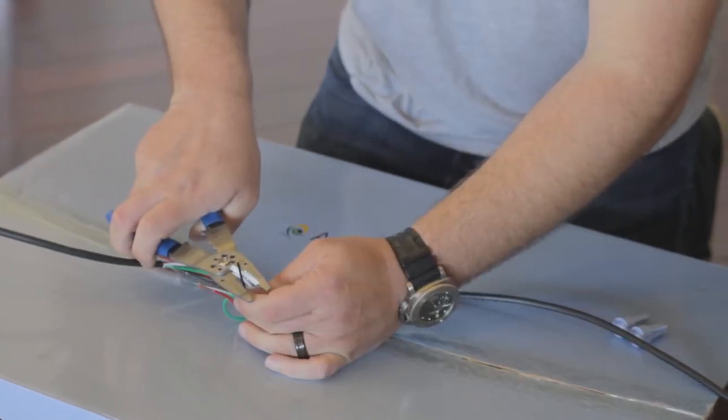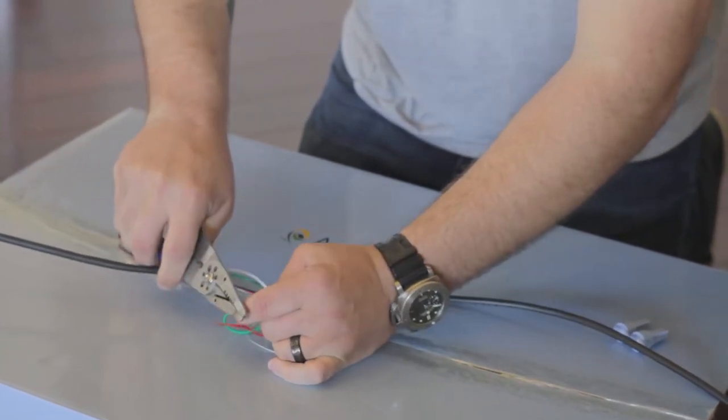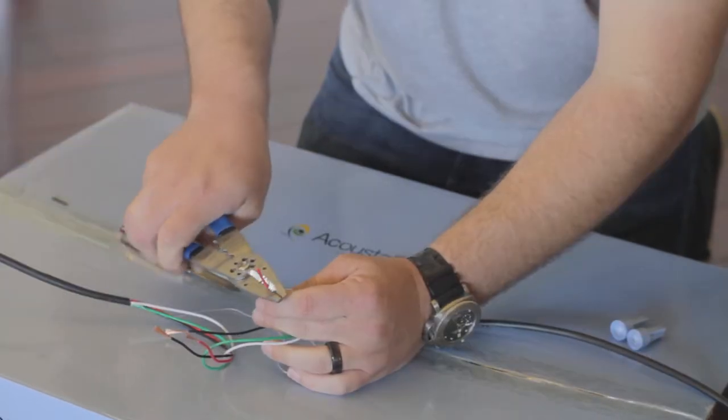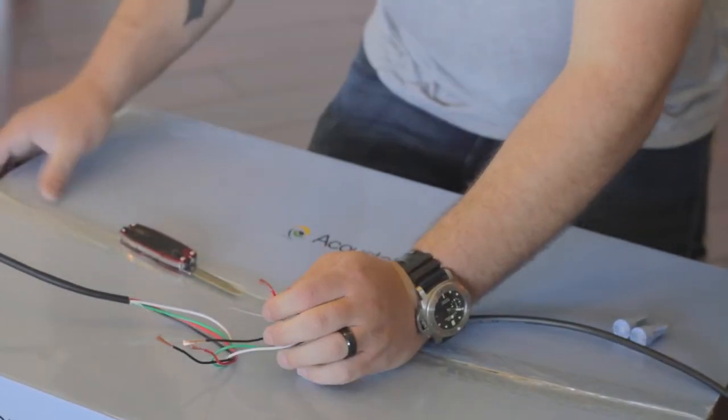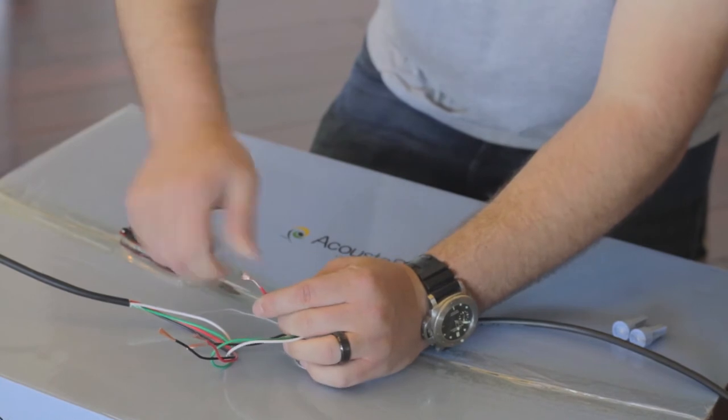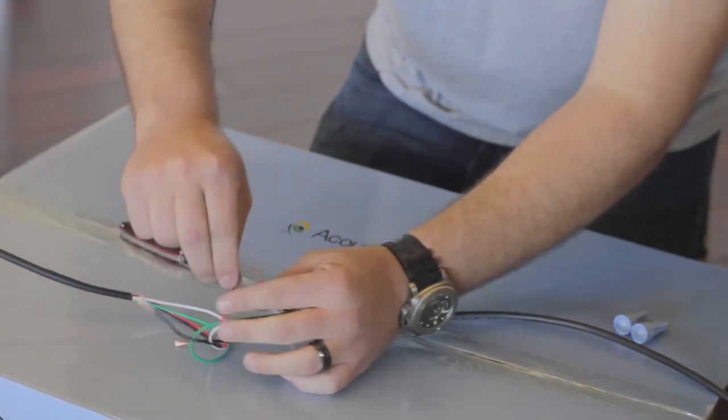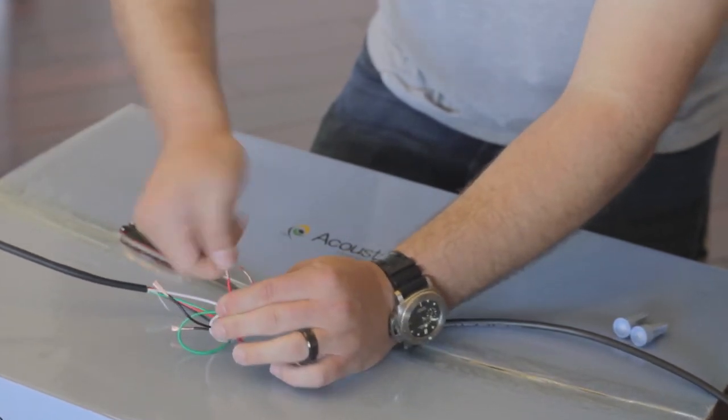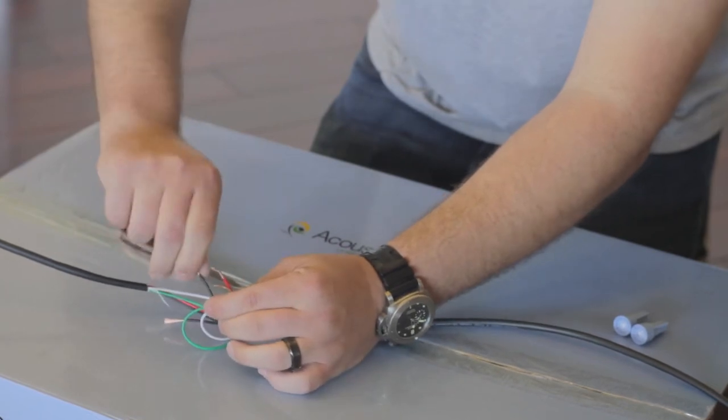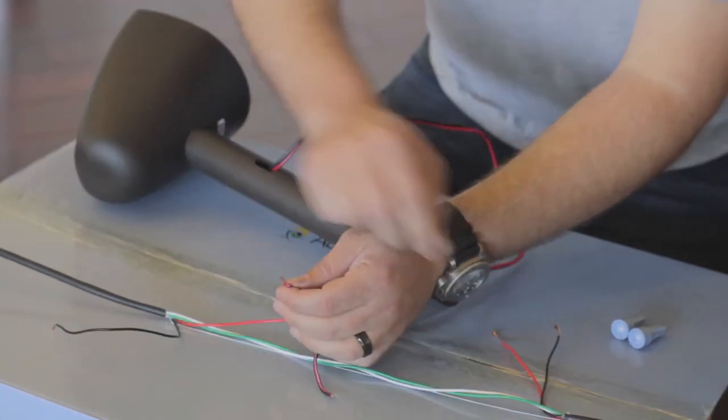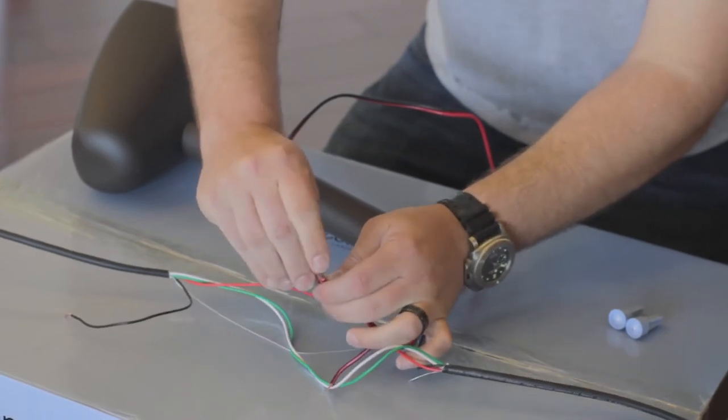Next, use the wire strippers to remove approximately 1 inch or 25 millimeters of insulation to expose the copper wire. Twist the exposed copper wire conductor together to keep the wire from fraying.